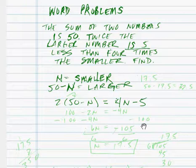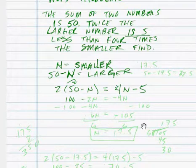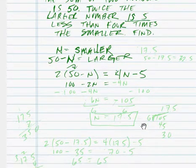Let's go ahead and simplify. Multiply. So 2 times 50 is 100, 2 times n is negative 2n. 4n minus 5, that's pretty straightforward, we leave that.